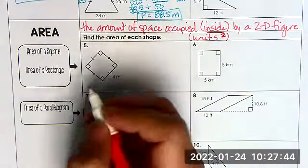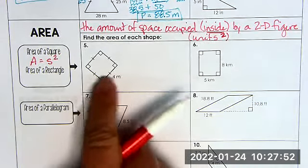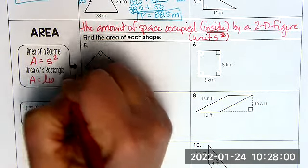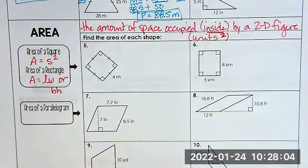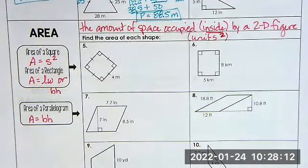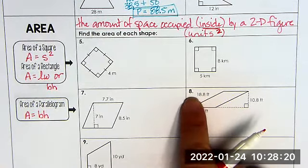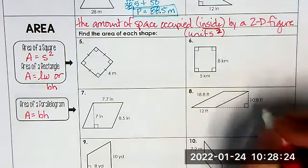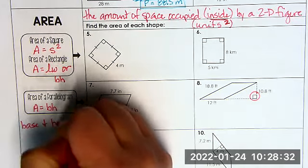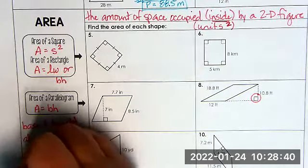Let's write down the area of a square formula. A equals S squared, because the sides are the same. Notice all the tick marks, so therefore all the sides are the same. Area of a rectangle is length times width, or base times height. You can think about it either way. The area of a parallelogram, this way you only have to remember one. You can continue to use base times height. The base and height always form a right angle.